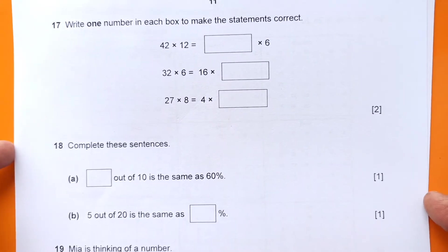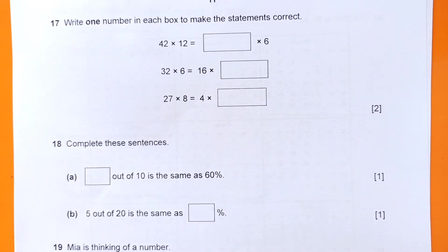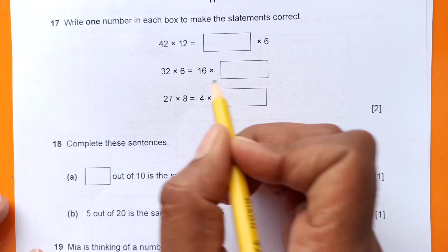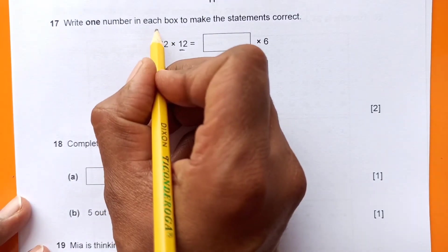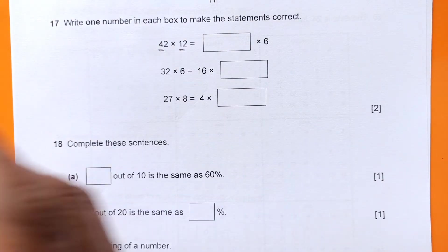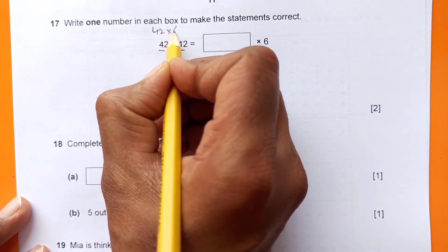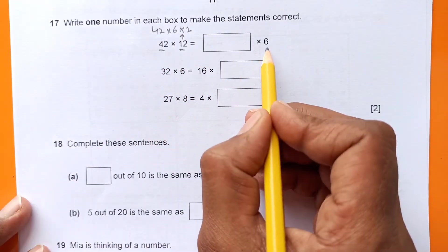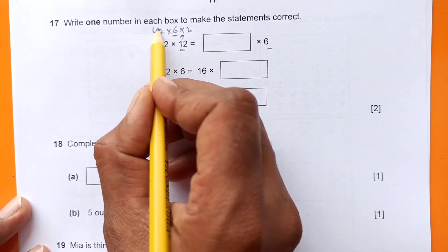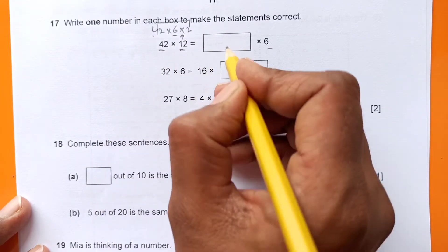Write one number in each box to make the statements correct. We have 42 times 12, right? So this is 6. If I write here 42 times, we can write it down as 6 times 2 to 12, so we have 6 here. That means we need the remaining one, so 42 times 2 will be 84 here in this box.